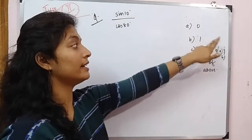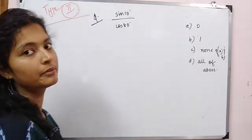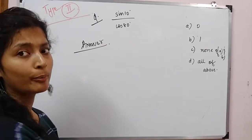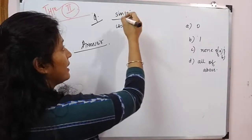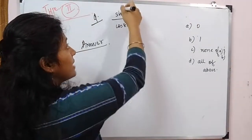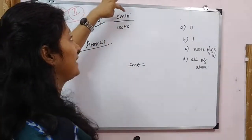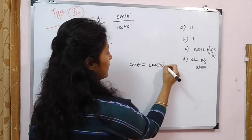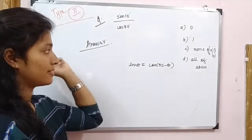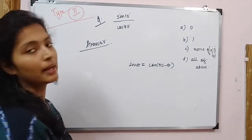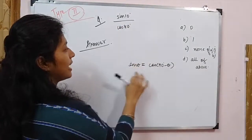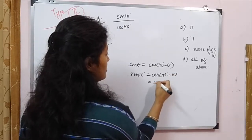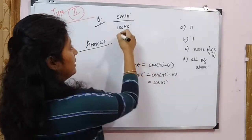The four options are: 0, 1, none of the above, and 2. Since we don't have the value of sin 10°, we will use the complementary formula. We can change the value of sin 10°. Using the complementary formula: sin θ = cos(90° − θ). So what can we do with sin 10°? We can write it as cos(90° − 10°), which equals cos 80°.